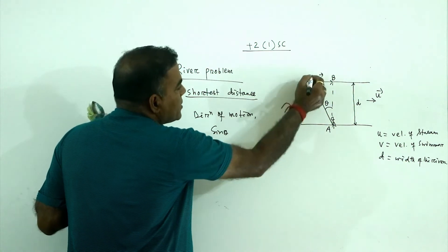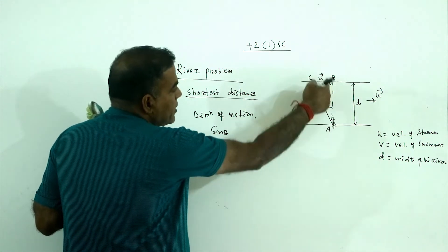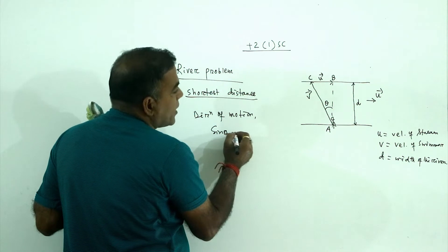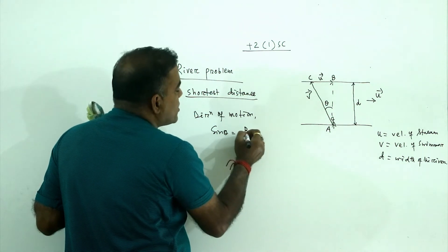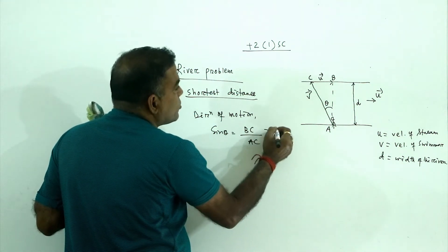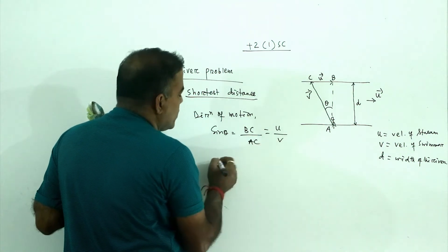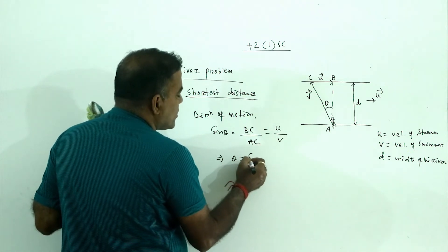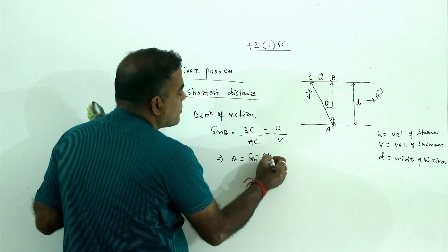Let's add a point C. Then in triangle ABC, sin theta equals BC divided by AC, where BC has magnitude u and AC has magnitude v. It implies theta equals sine inverse of u by v.